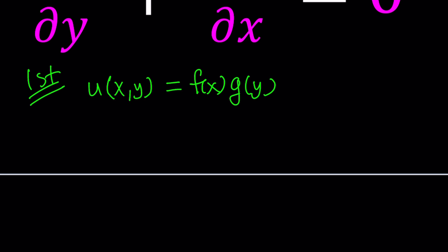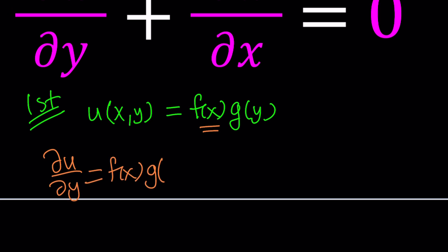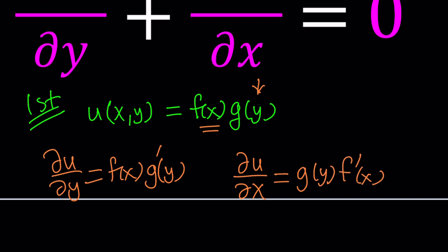So let's go ahead and differentiate with respect to y, which means x is going to be treated as a constant. When you differentiate with respect to y, since f is a constant, f of x stays and we just differentiate g — which is a function of y — giving us g prime. Similarly, when you differentiate u with respect to x, g of y is a constant so it stays, and f will be differentiated giving us f prime. Those are the partial derivatives in terms of f and g.